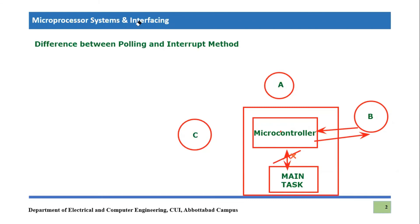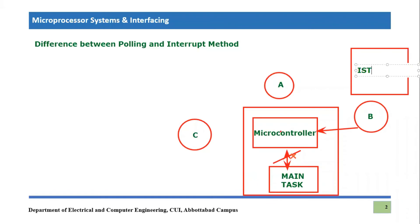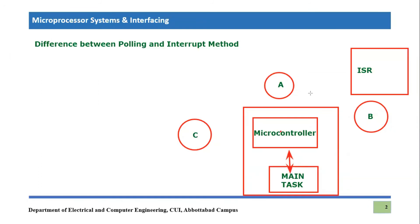There is a separate code called the Interrupt Service Routine, or ISR. The microcontroller switches to that ISR and performs that task. Once the ISR finishes — meaning device B has been served — the microcontroller comes back to its main code which was running earlier. Whenever another device needs service, it sends an interrupt signal and the microcontroller provides a specific interrupt service routine to that device. This is the key difference between polling and interrupt methods.